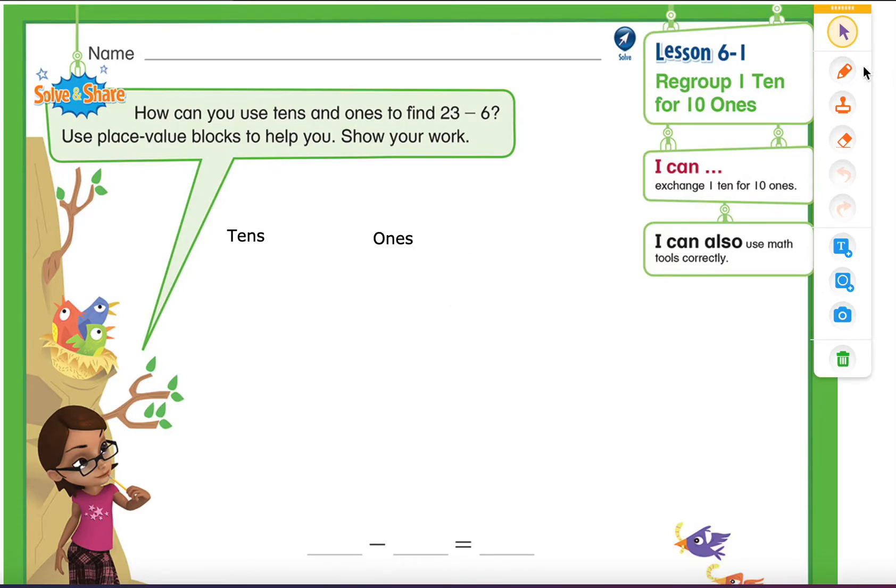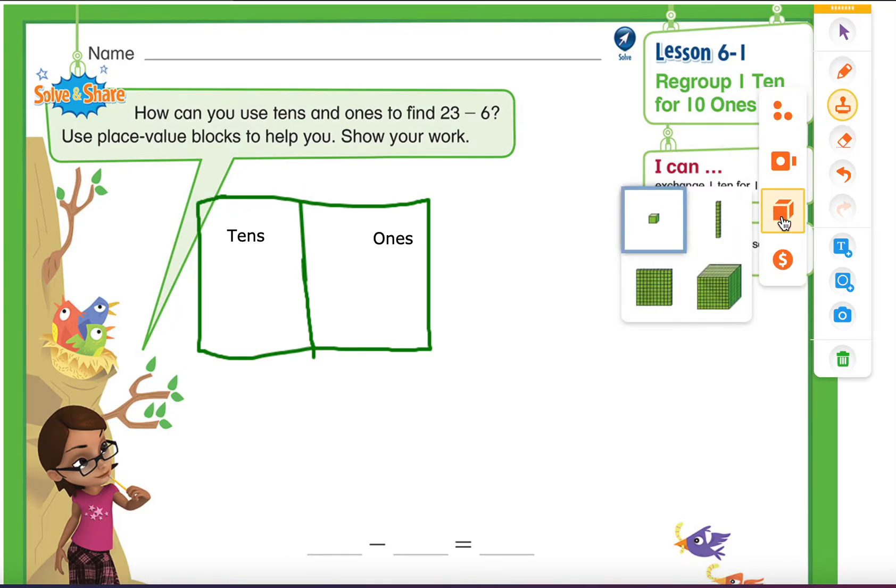So first, we will look at our solve and share, and we are going to see what do we need to do. How can you use tens and ones to find 23 minus 6? We are going to write down our 23 in terms of tens and ones. So let's go to our manipulative bar. We're going to grab our tens and ones.